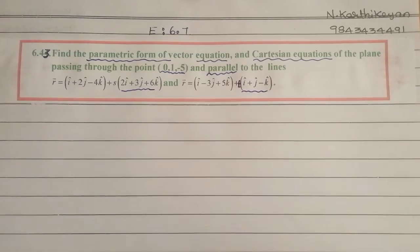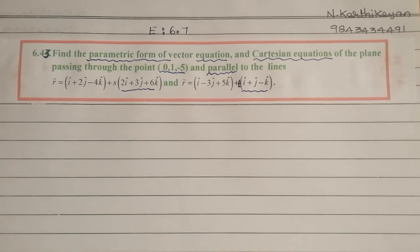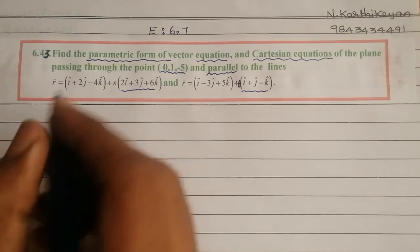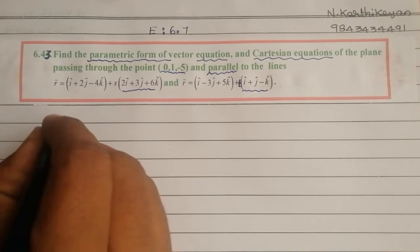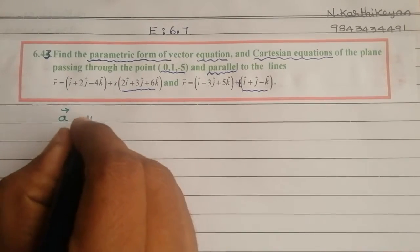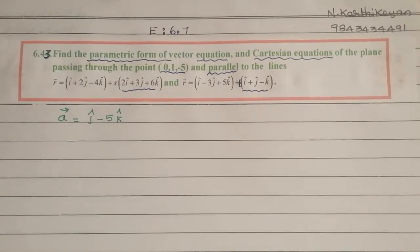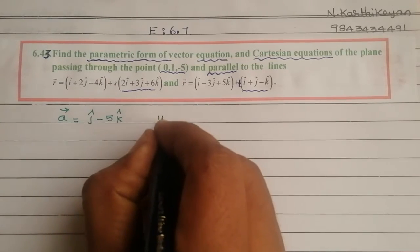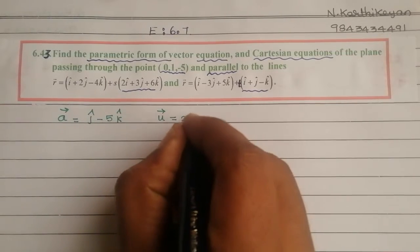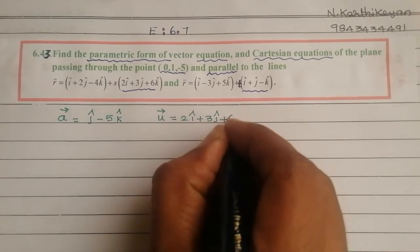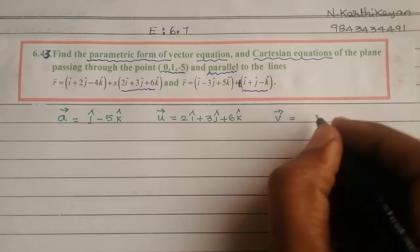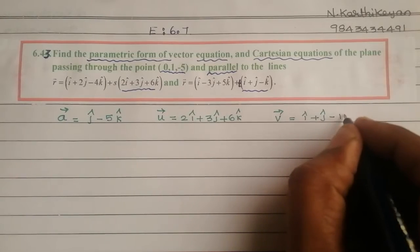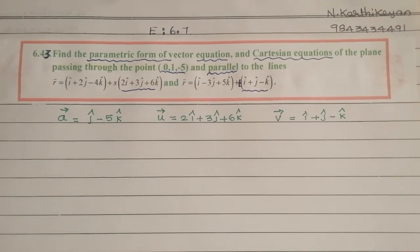We have a point and two vectors. So that gives us two direction vectors. The a vector — the position vector of the point — is j cap minus 5k cap. Then u vector equals 2i cap plus 3j cap plus 6k cap, and v vector equals i cap plus j cap minus k cap.